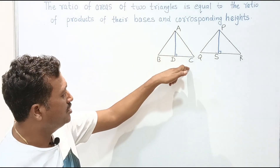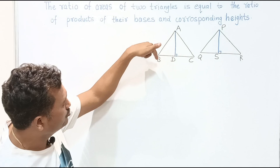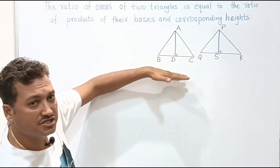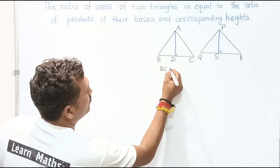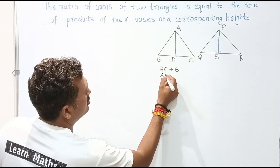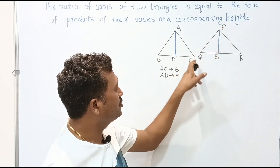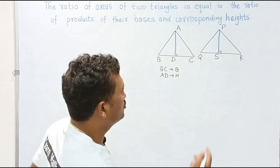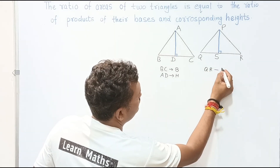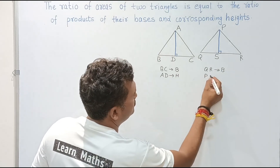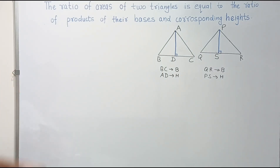I have taken two triangles here. The first triangle is ABC and the second triangle is PQR. AD is perpendicular to BC, which means AD is the height and BC is the base of triangle ABC. Similarly, in triangle PQR, PS is perpendicular to QR, so PS is the height and QR is the base of the second triangle.